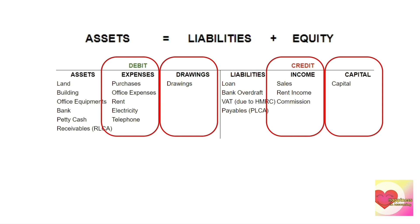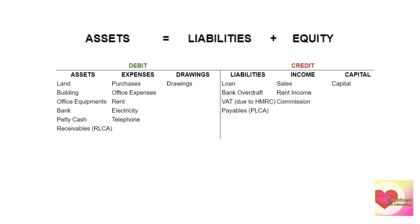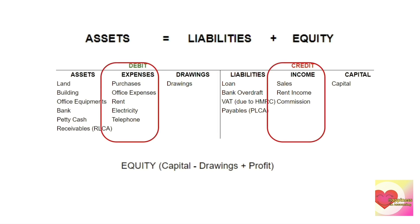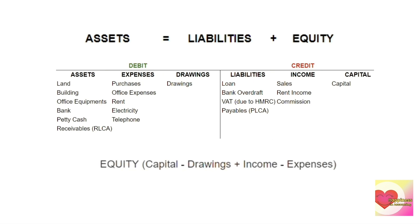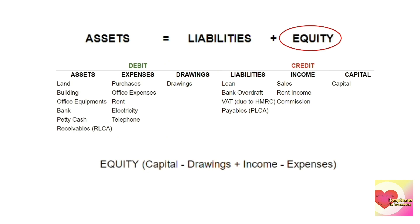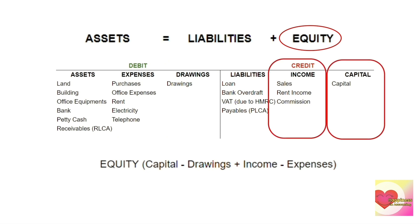Let's see what equity consists of: Equity = Capital − Drawings + Profit, and Profit = Income − Expenses. Expanding this further: Equity = Capital − Drawings + Income − Expenses. Now we can see all four remaining accounts from DEAD CLIC, explaining why they appear where they do.